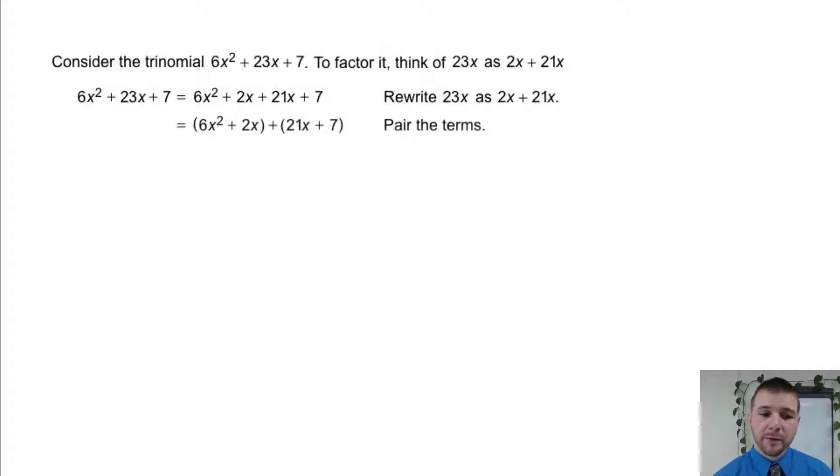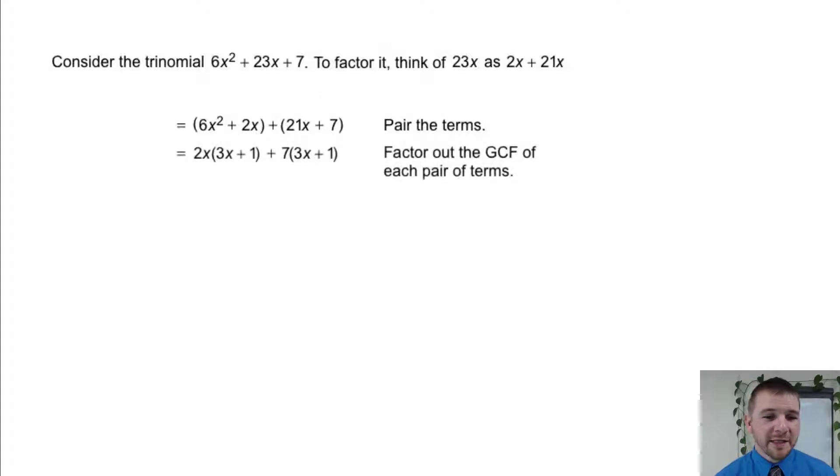Now we group, on the left grouping 6x² + 2x, and on the right grouping 21x + 7, pairing up the terms. Now we can factor out a GCF from each of those two binomials. The GCF on the left, 2x, factors out and leaves us with 2x times (3x + 1). On the right hand side, the GCF of 7 can be factored out, and leaves us with 7 times (3x + 1).